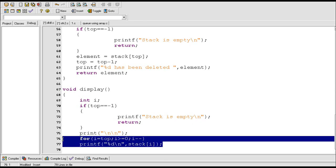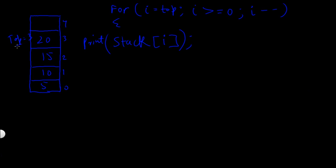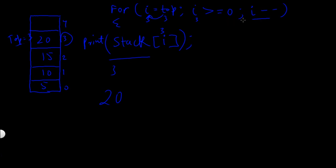These two statements will be responsible for displaying the elements of the stack. Let's take an example: here the value of top is 3, so i will be assigned the value of top — i will become 3. This statement checks if i is greater than or equal to 0. Yes, i is greater than 0, so the condition is true and the statement gets executed. The value of i is 3, and the value at that position in the stack is 20, so 20 gets printed. Then i is decremented by 1, from 3 to 2.